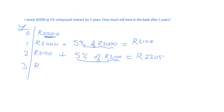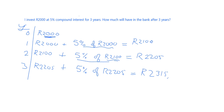In the third year you start with 2,205 and get 5% interest on that amount, giving 2,315 rand and 25 cents. With simple interest you'd have gotten 100 rand each year — totalling 2,300. With compound interest you end up with slightly more because you earn interest not only on the original amount but on the accumulated interest too.